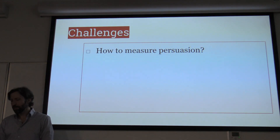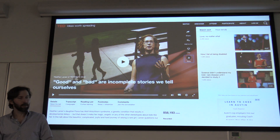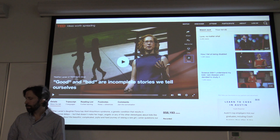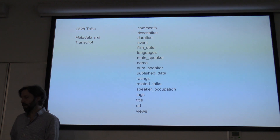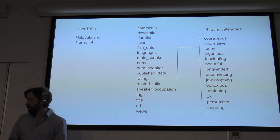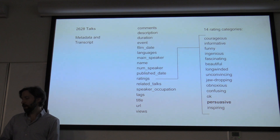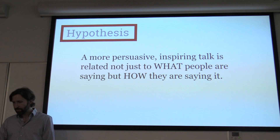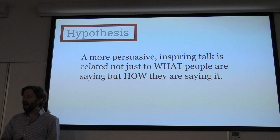How do we measure persuasion? If you visit TED.com and look on the side of any talk, you'll see a rate button that allows users to store their ratings. I web scraped all the TED talks available through 2017 and found 2,628 talks. There was a variable called ratings that had 14 different rating categories. One was a count of how many users had called the talk persuasive, and another was how many users had called the talk inspiring. My hypothesis is that a more persuasive, inspiring talk is related to not just what people say, but how they say it.